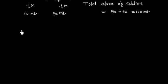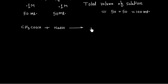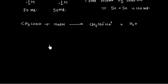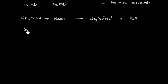At the end of the reaction, CH3COOH (acid) reacts with NaOH (base) to give CH3COO⁻Na⁺ (salt) plus water. Initially we have 5 millimole of acid and 5 millimole of base, and this results in finally 5 millimole of salt.